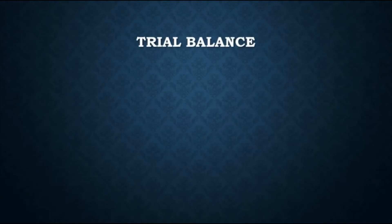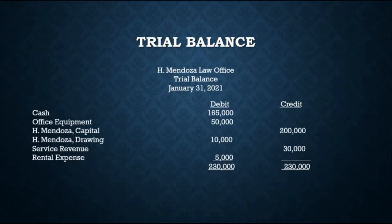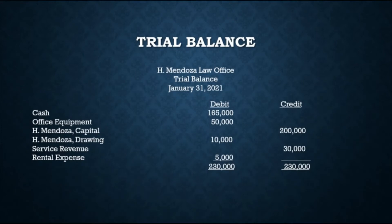After determining the ending balances of each account, we can prepare the trial balance. A trial balance is a list of accounts and their balances at a given time, usually prepared at the end of an accounting period. Accounts are listed in the order they appear in the ledger, with debit balances in the left column and credit balances in the right column, and the totals of both columns must be equal. The steps in preparing a trial balance are: write the heading — name of the business, the term 'Trial Balance,' and the date.